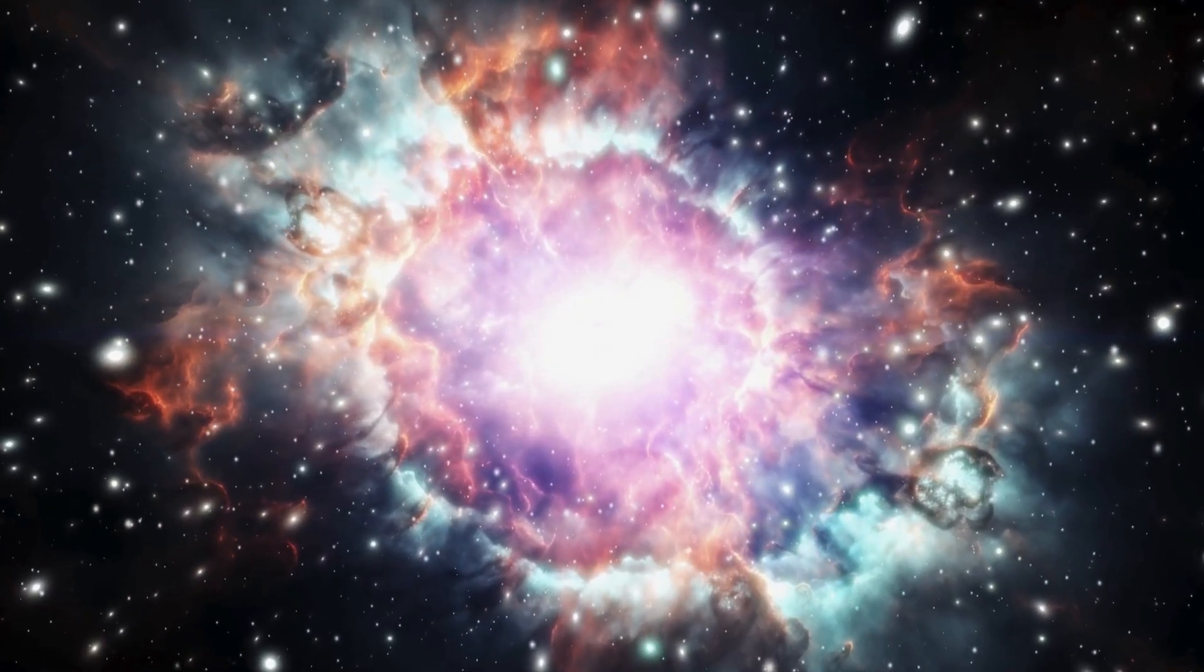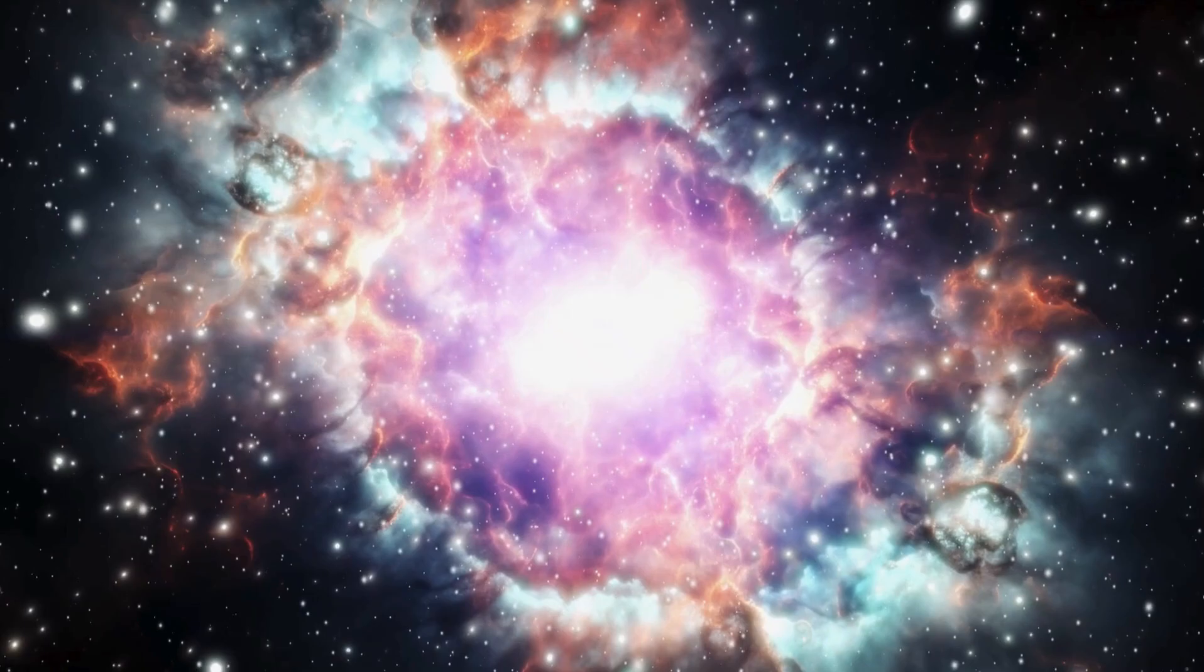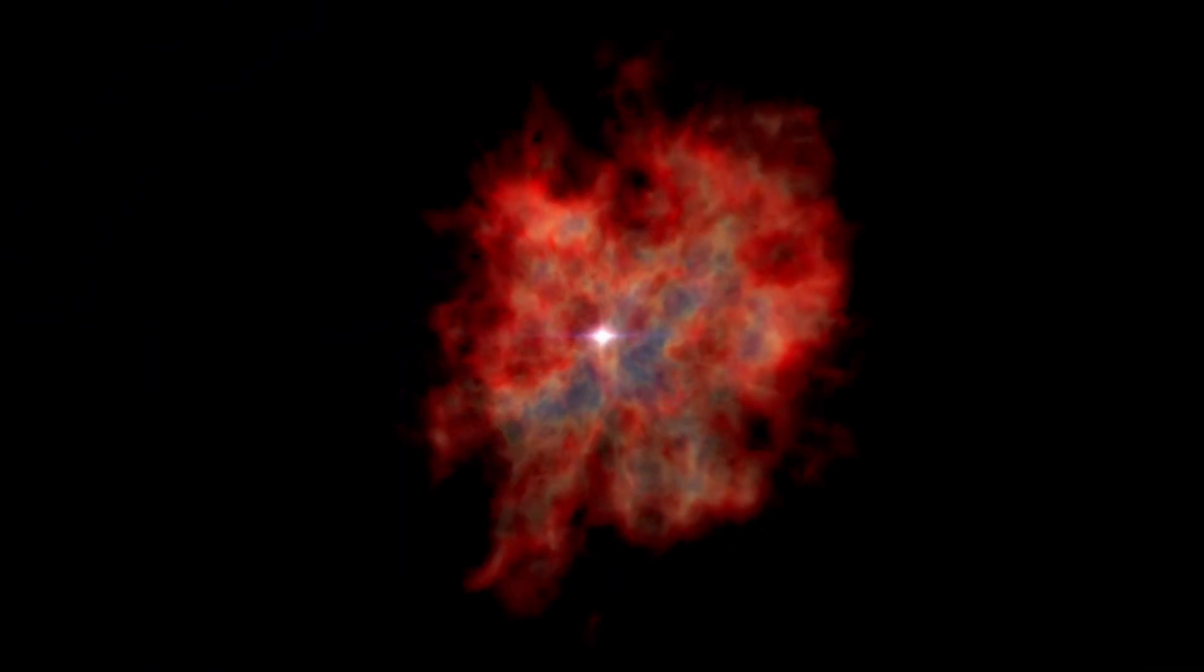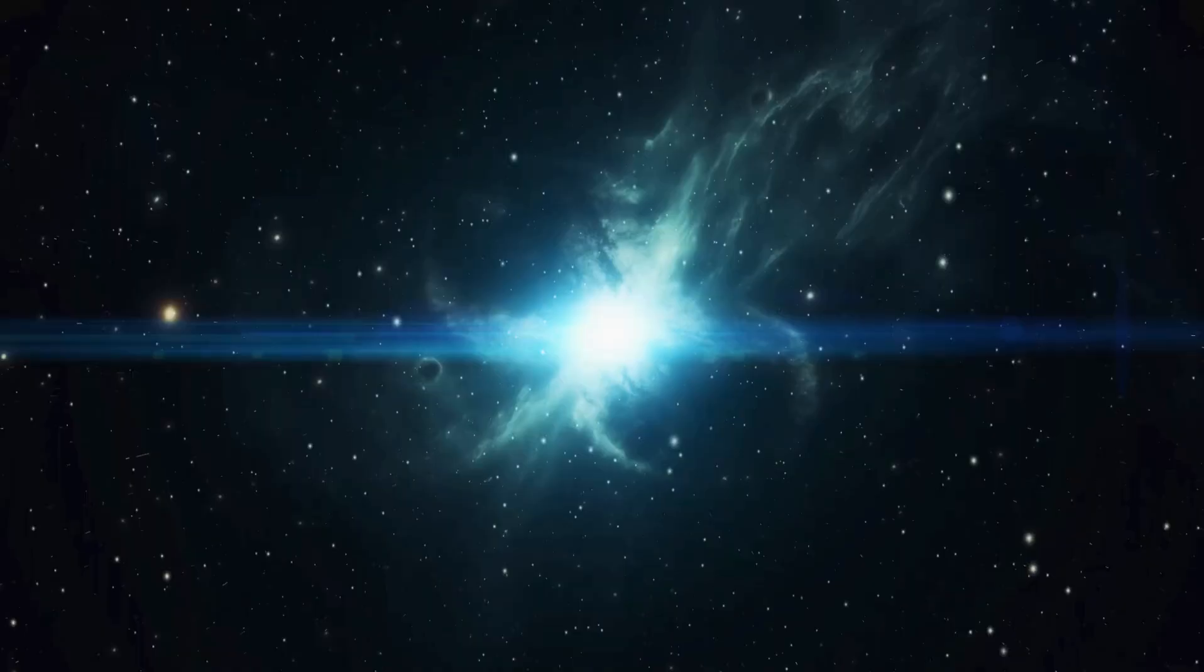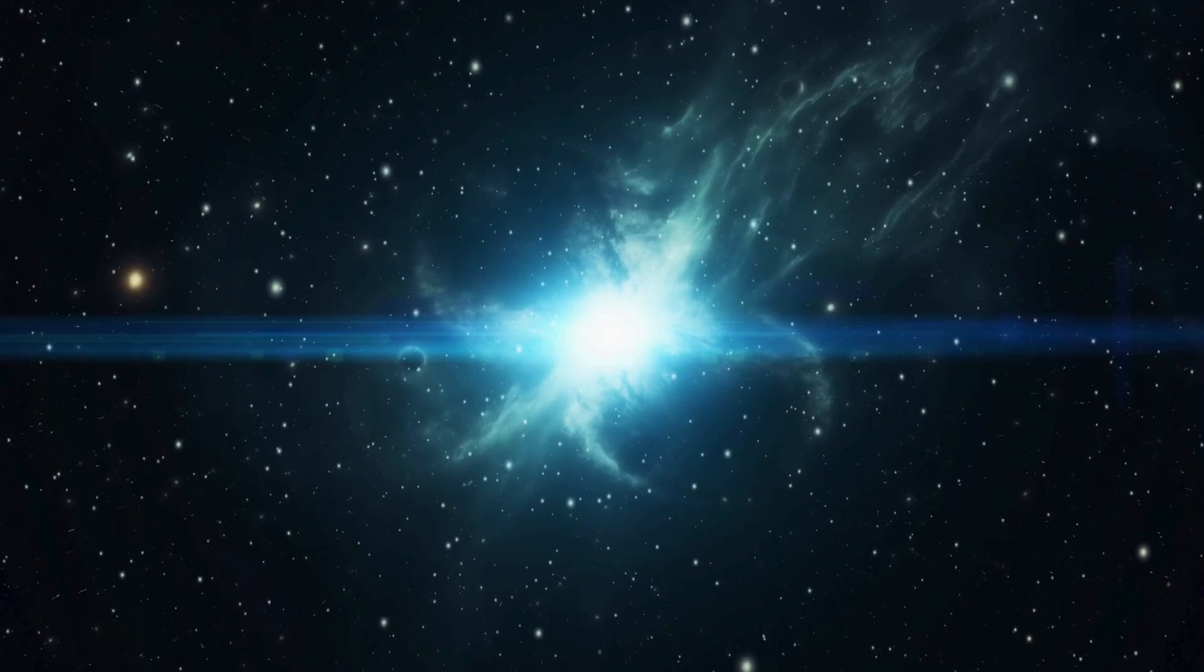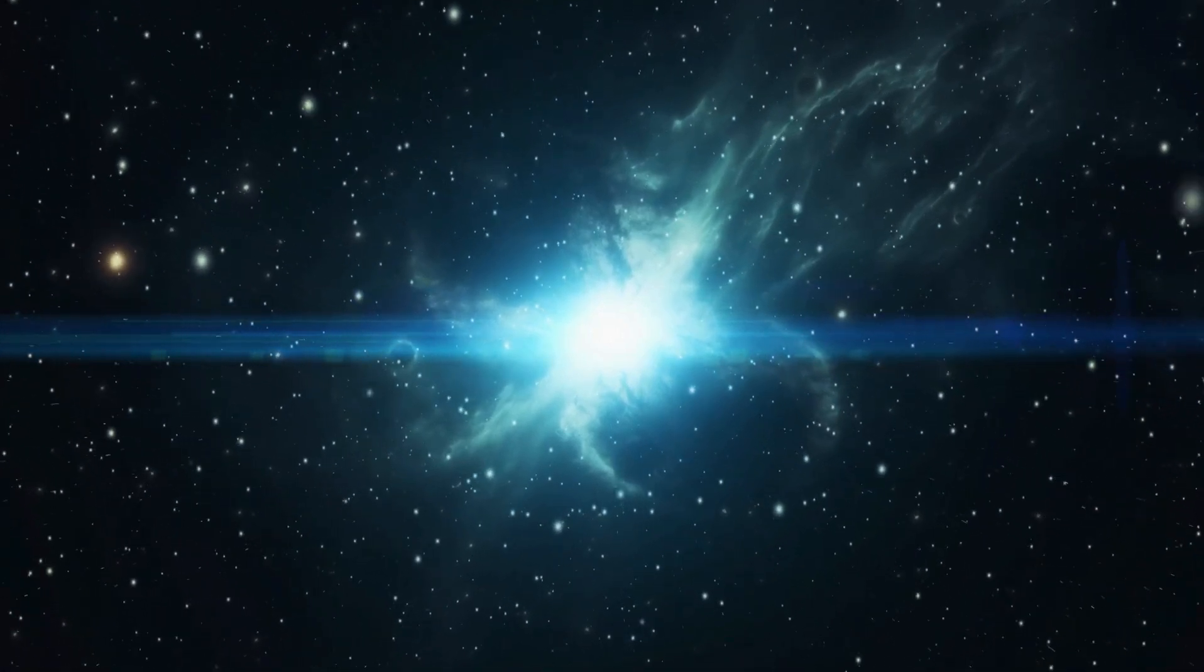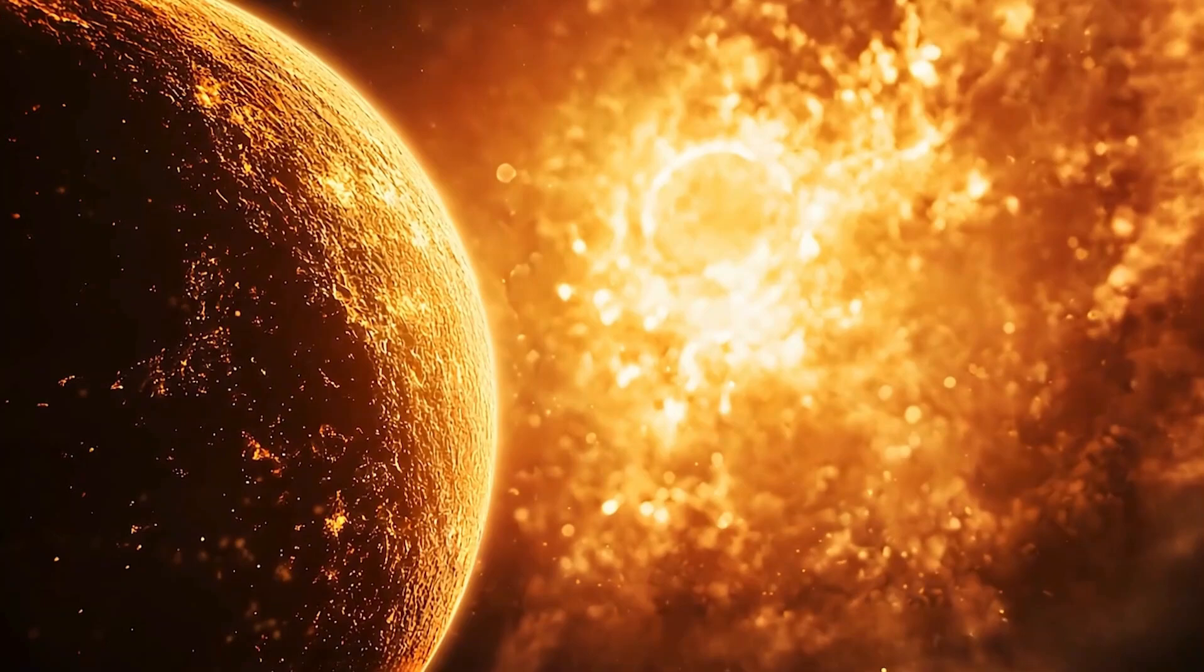Brace yourselves for a cosmic cataclysm of unprecedented proportions. Betelgeuse, the red giant star poised on the edge of our galaxy, is sending ominous signals through the universe. Using the James Webb Space Telescope, astronomers have uncovered something profoundly unsettling about this colossal celestial body, as renowned astrophysicist Brian Cox issues a grave warning.